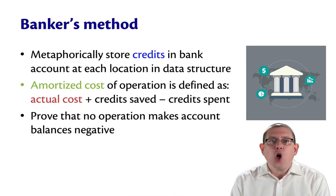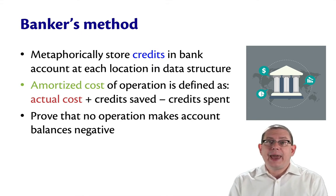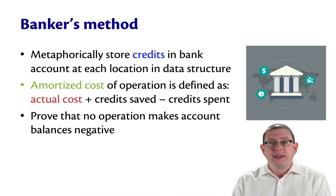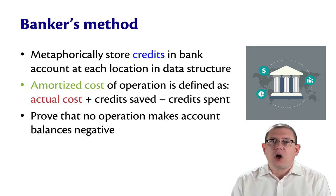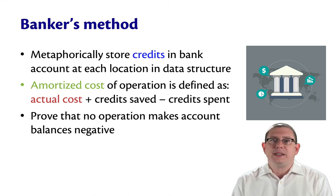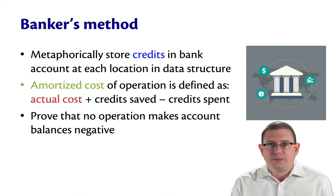All you have to do is prove that no operation makes an account balance negative. By doing that, you're guaranteeing that the amortized costs are always at least as big as the actual costs over the whole sequence, but you get to think about it per operation.